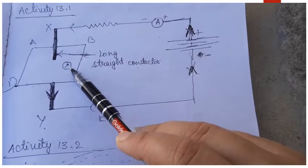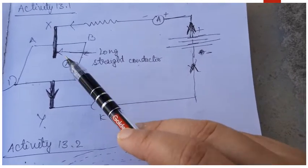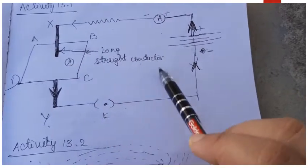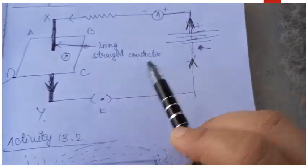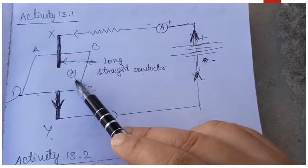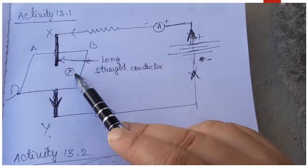You place a compass near the wire and as soon as you start the flow of current by inserting the key, you see that compass starts to point in a particular direction, deflects.